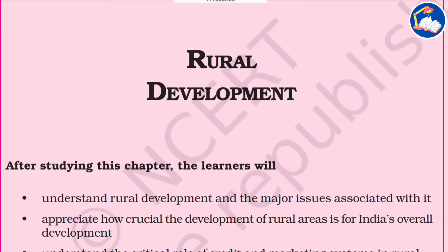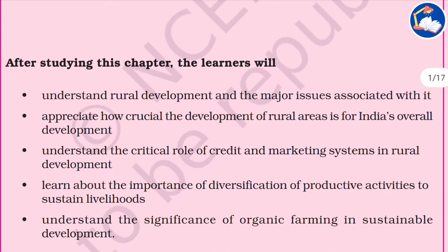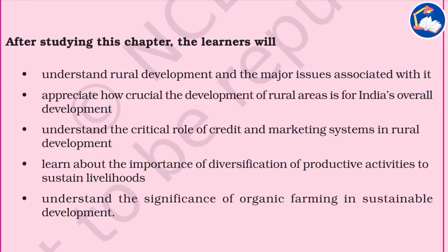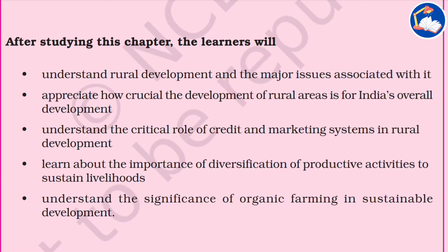In today's lecture we'll be looking at the topic of rural development. By reading this chapter we'll be learning about rural development and the major issues associated with it, appreciating how crucial the development of rural areas is for India's overall development, understanding the critical role of credit and marketing systems, the importance of diversification of productive activities to sustain livelihoods, and the significance of organic farming in sustainable development.